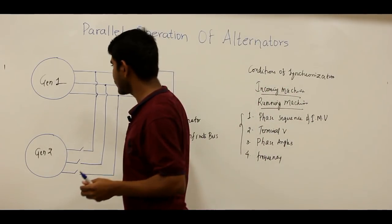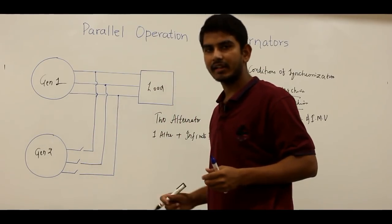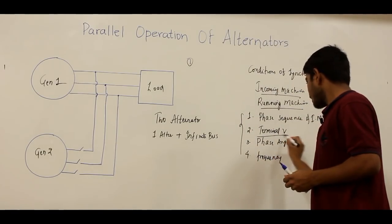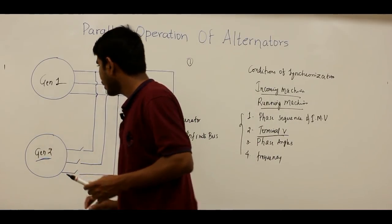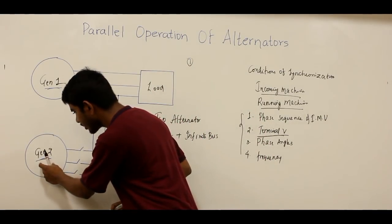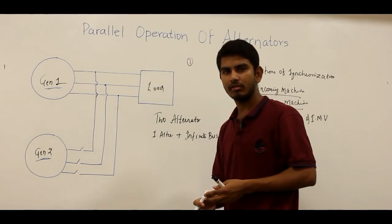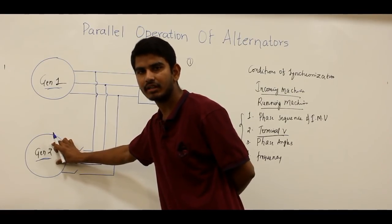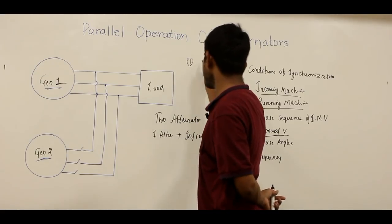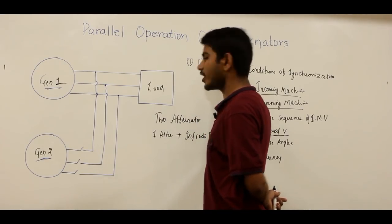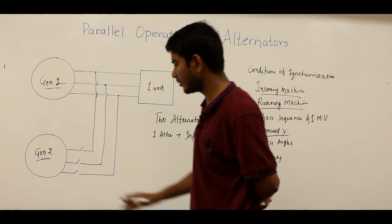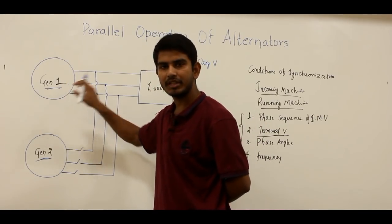The procedure for parallel operation: First, we verify that the terminal voltages of the incoming machine and the running machine are the same using voltmeters. If they are not the same, we adjust the terminal voltage of the incoming machine by changing its field current, making it equal to the terminal voltage of the running machine.